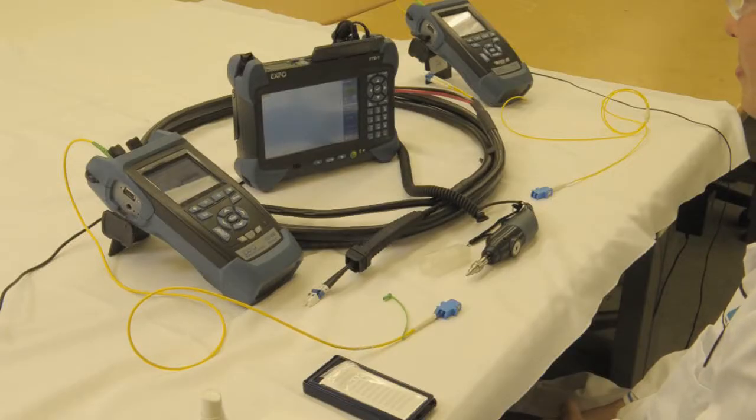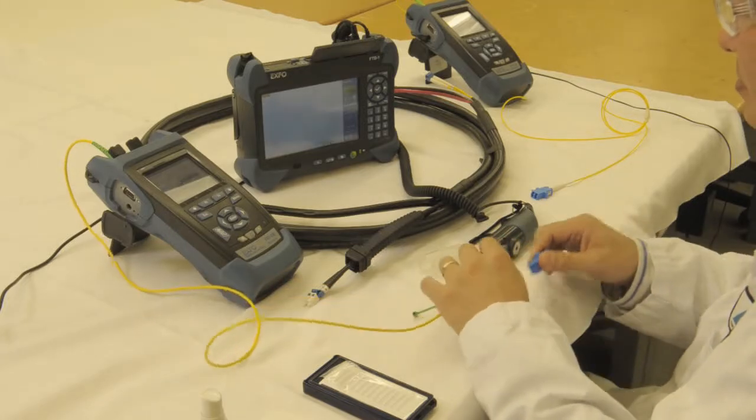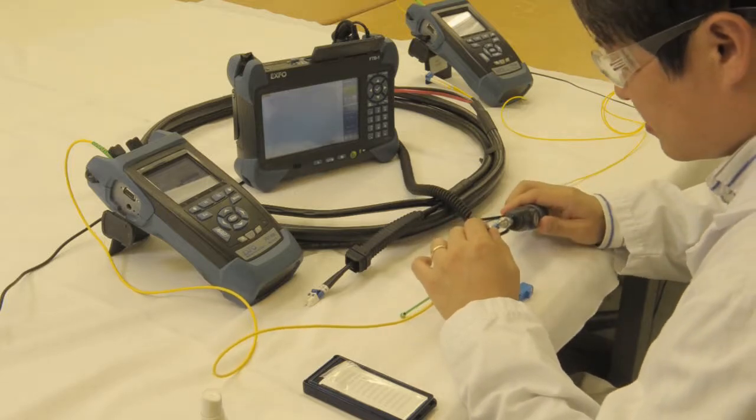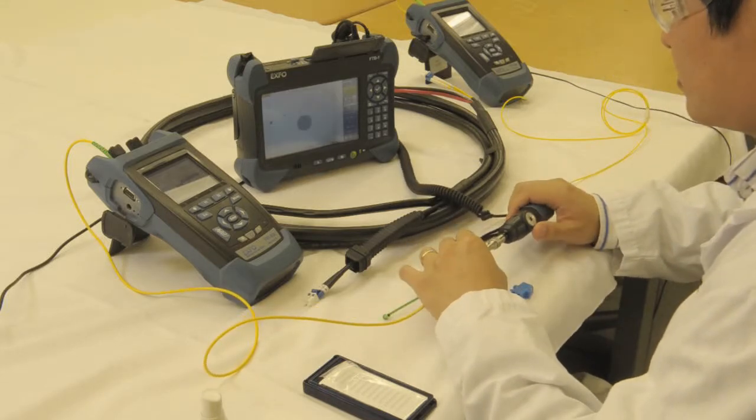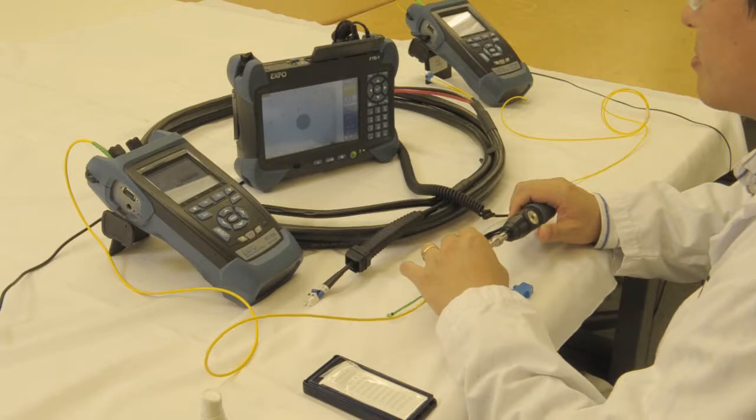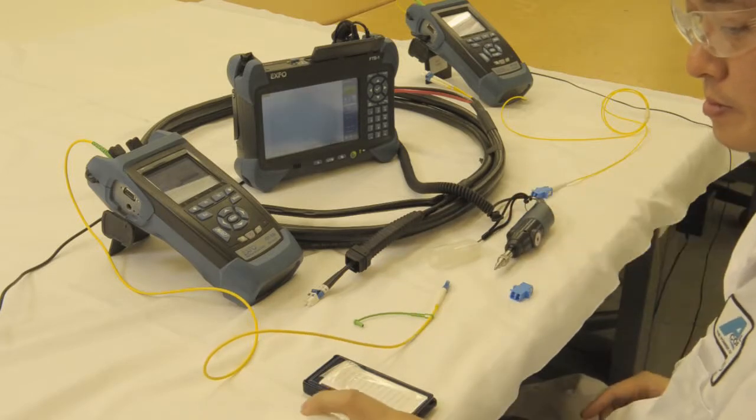The next step in the process is we're going to test our device under test. Here we have a one pair hybrid jumper. First thing we're going to do is look at the reference cables and make sure that they're good. We have to make sure that they're clean and ready to use so we don't contaminate the installed fiber.